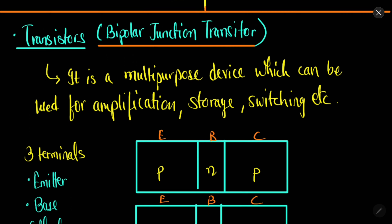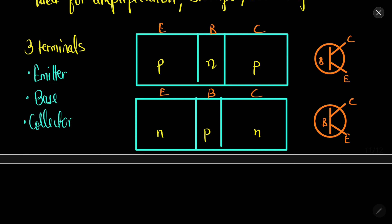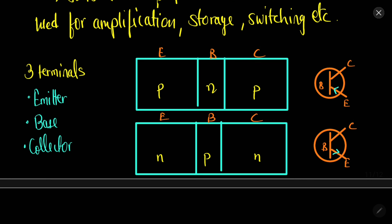Let us take the NPN transistor as an example. The symbol for the transistor has three terminals drawn — emitter, base, and collector — with a circle around them. In the case of a PNP transistor the direction of current flow is from base to emitter. These are the symbols used for PNP and NPN transistors.